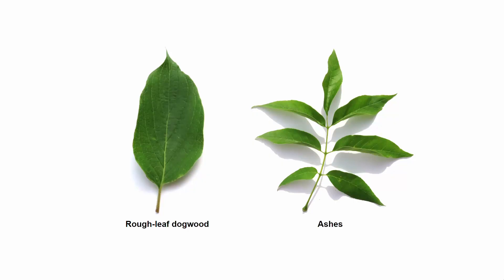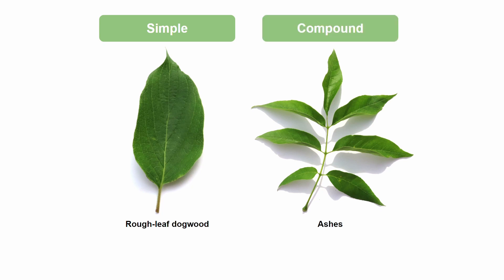To the untrained eye, it might seem like I'm showing you a picture of a leaf and a picture of a branch right now, but that's not the case. Both pictures show two different types of leaves. Cornus drummondii, otherwise known as rough leaf dogwood, has simple leaves, and a member of the genus Fraxinus, otherwise known as ash, has compound leaves.